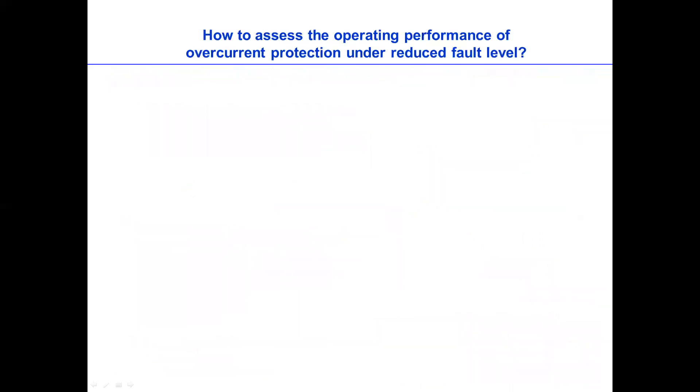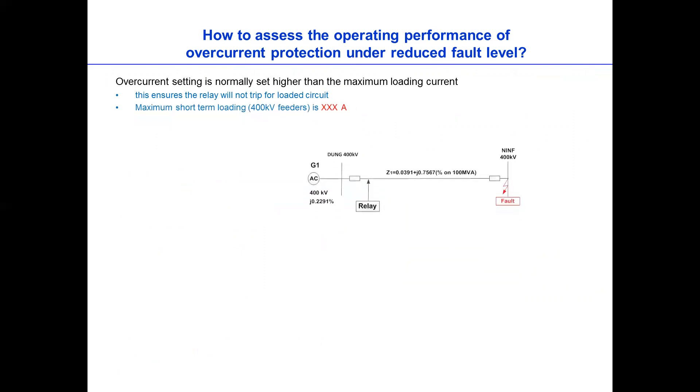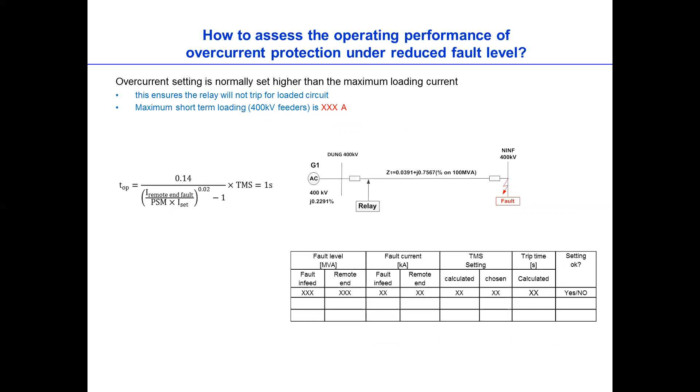And the next section is how to assess the operating performance of overcurrent protection under reduced fault level. Well, this is a hot topic at the moment because of the penetration of renewable energy sources. So the fault level is reduced substantially, as we are using low inertia technology. So the problem or the challenge is how do we set overcurrent protection as compared to conventional.